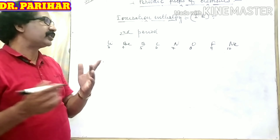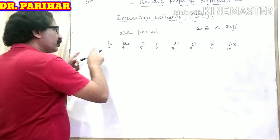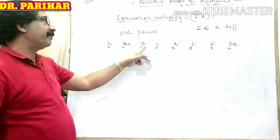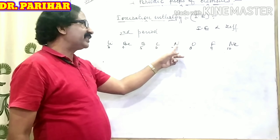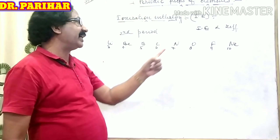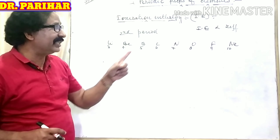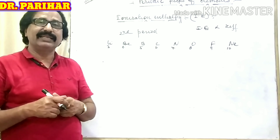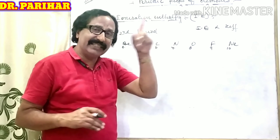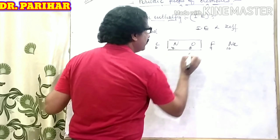Ionization enthalpy is directly proportional to Zeff, and the value of Zeff increases from left to right in this period. We can declare: ionization enthalpy of beryllium is higher than lithium, IE of boron is higher than beryllium, ionization enthalpy of nitrogen is higher than carbon, and ionization enthalpy of oxygen must be higher than nitrogen. But the question is: the first ionization enthalpy of nitrogen is actually greater than oxygen. Why?